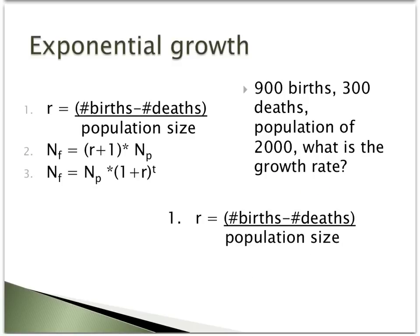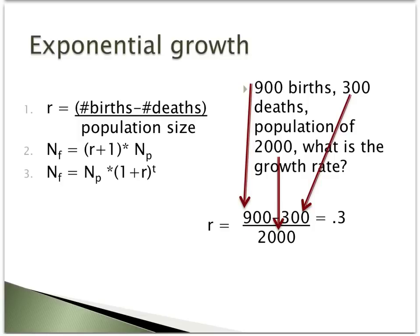For this first example problem, what we'll try to do is calculate R, or the growth rate of a population. If there are 900 births and 300 deaths in a population whose size is 2000, what would the growth rate be? To determine the growth rate, you would take the number of births, 900, minus the number of deaths, 300, and divide that by the total population size, 2000. 900 minus 300 divided by 2000 is equal to 0.3, the growth rate of the population.